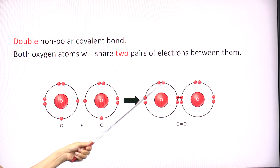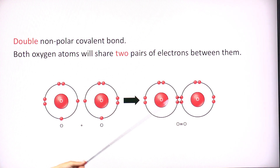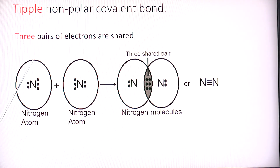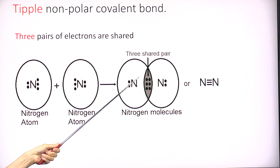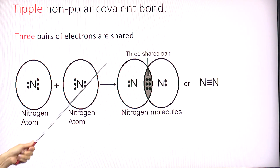We can also have a triple non-polar covalent bond. The example is nitrogen, where three pairs of electrons are shared and they spend equal time between the two atoms.